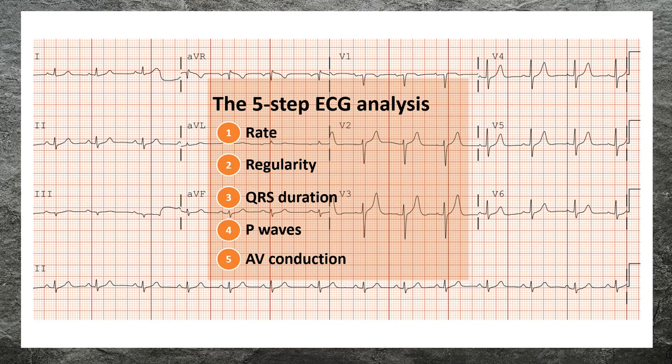The five-step ECG analysis consists of: one, determine the rate of the rhythm; two, determine the regularity of the rhythm; three, determine the QRS duration; four, determine the presence of P waves; five, determine AV conduction.